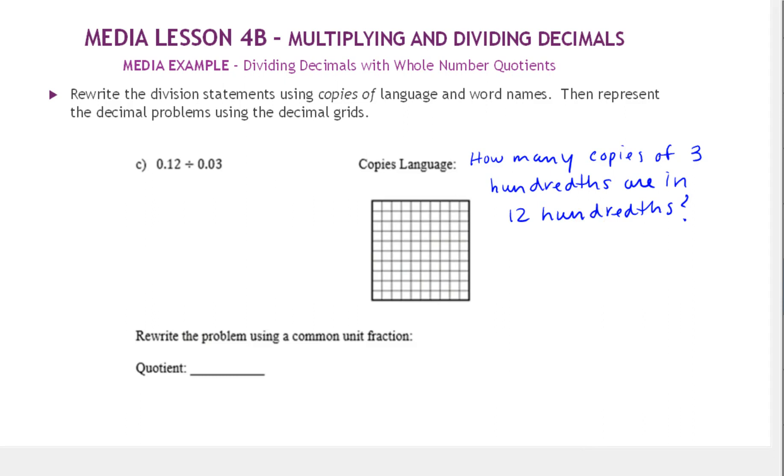So let's shade in our dividend, what we're dividing, which is 12 hundredths. So there's 12 hundredths. And we want to see how many copies of 3 hundredths.